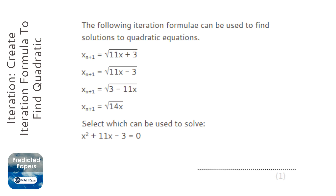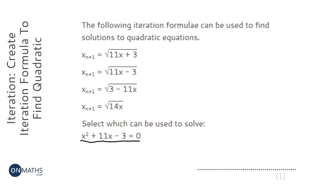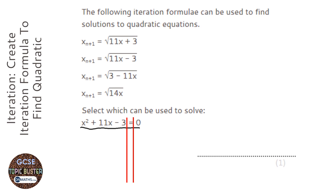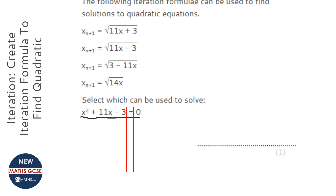This is quite a tricky question. You're being asked to figure out which of the following four can be created as an iteration formula for the equation shown at the bottom. Basically, what you need to do to find an iteration formula — and you won't be asked directly to find one, but you might be asked to evaluate one that has been found — is rearrange that equation so that you've got x equals, and then the expression can actually have an x in it as well, which it will do for an iteration formula.